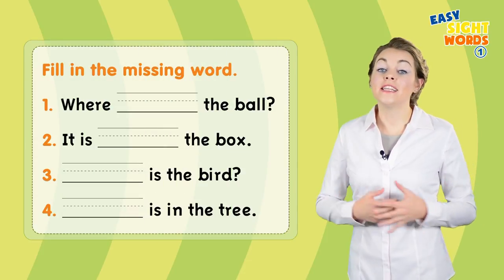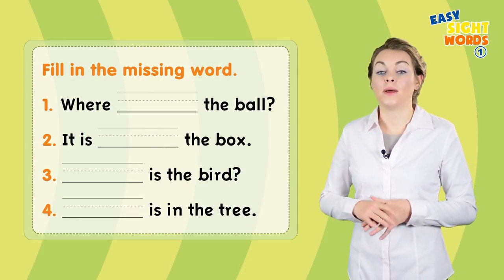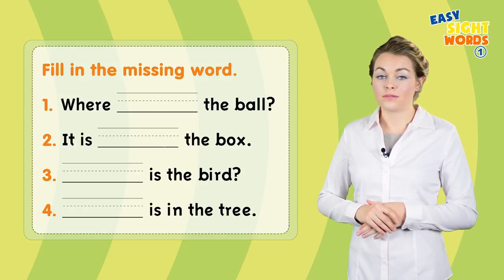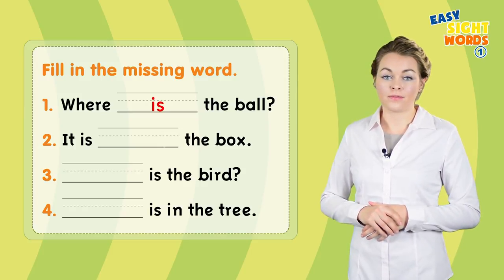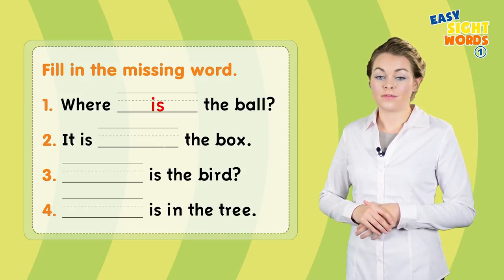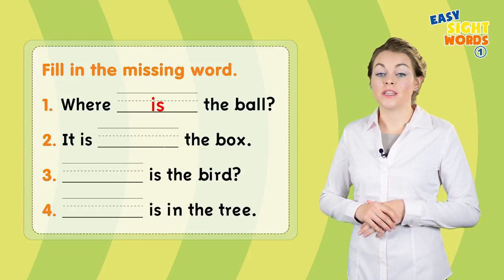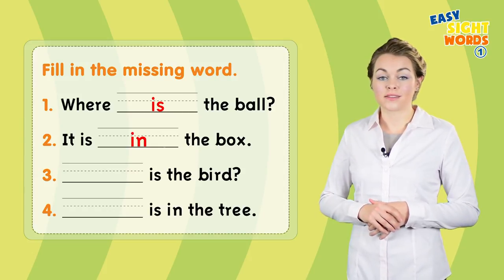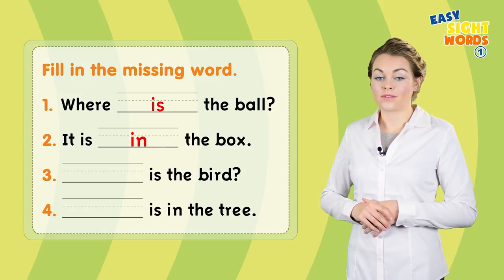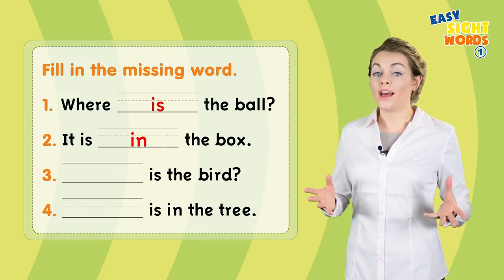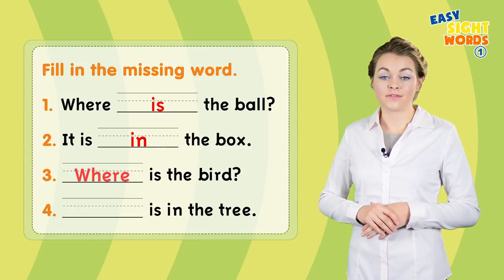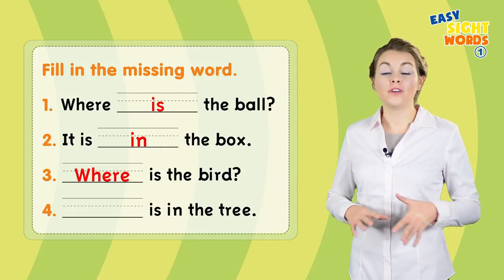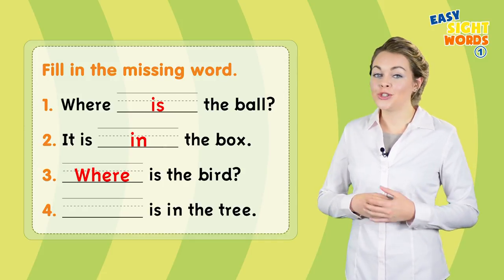Now fill in the missing word. Number one: where is the ball? Number two: it is in the box. Three: where is the bird? Four: it is in the tree.